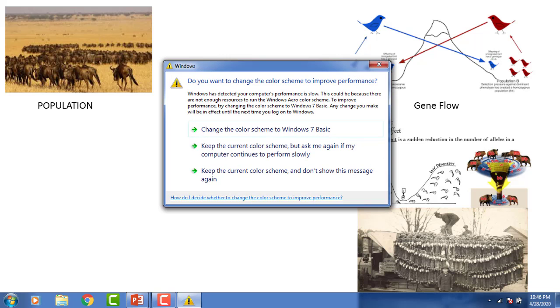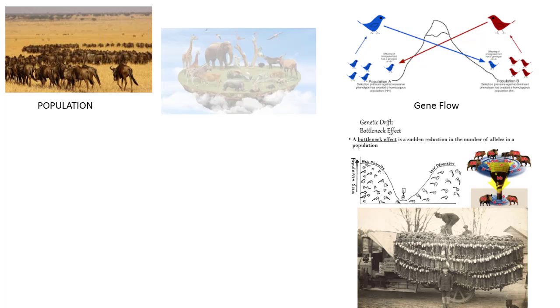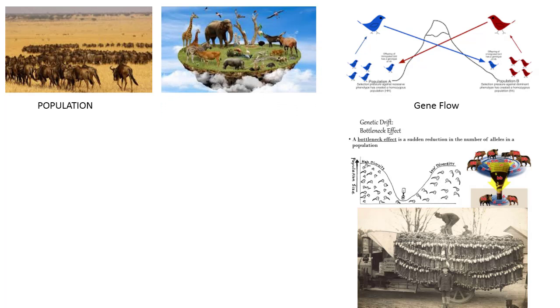When individuals of different species live together, they form a community. When the community collaborates, they form an ecosystem. In the ecosystem, individuals support each other but their individual balance remains constant.